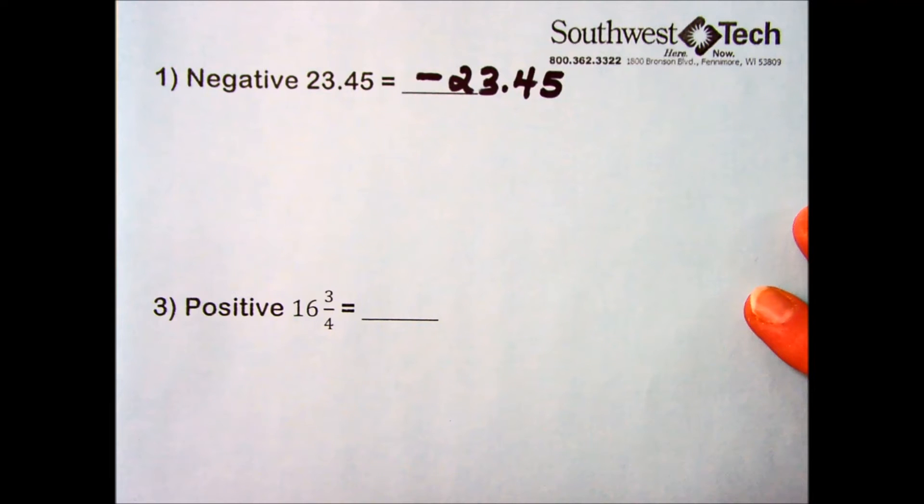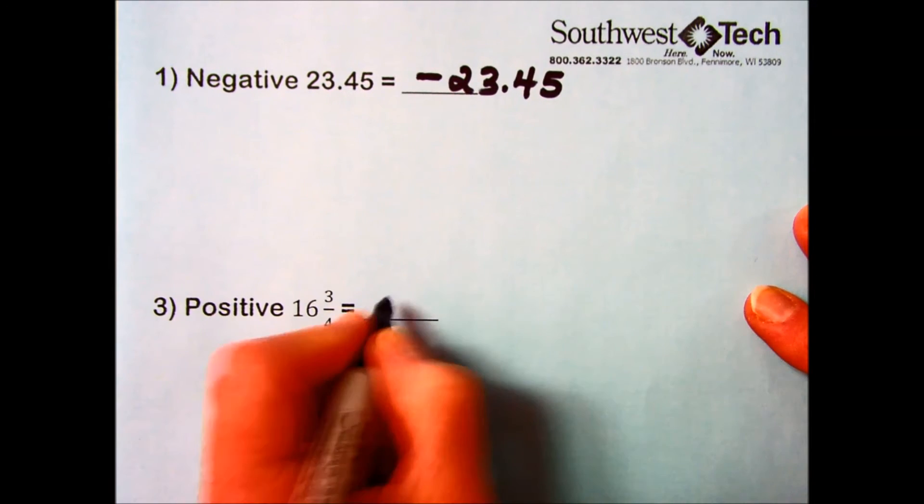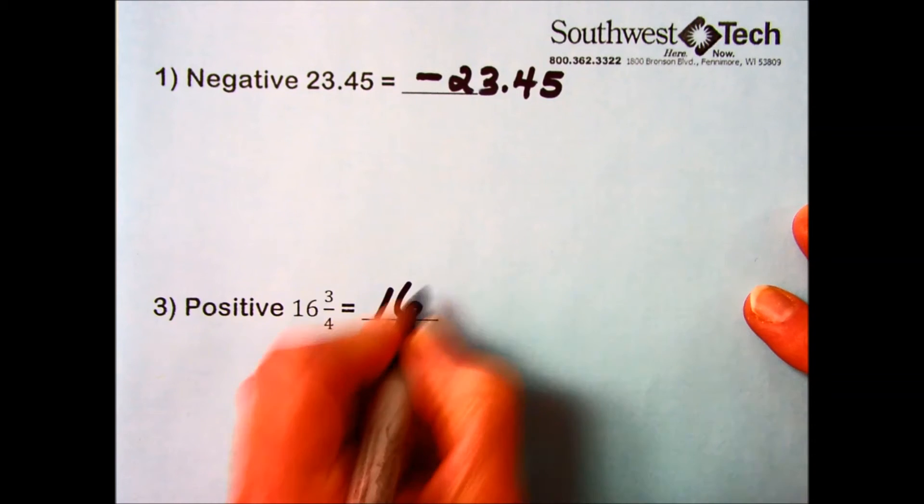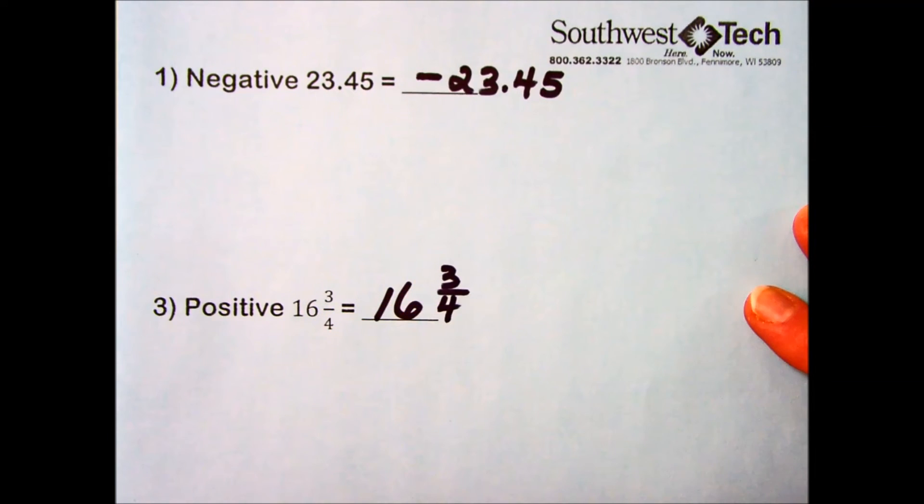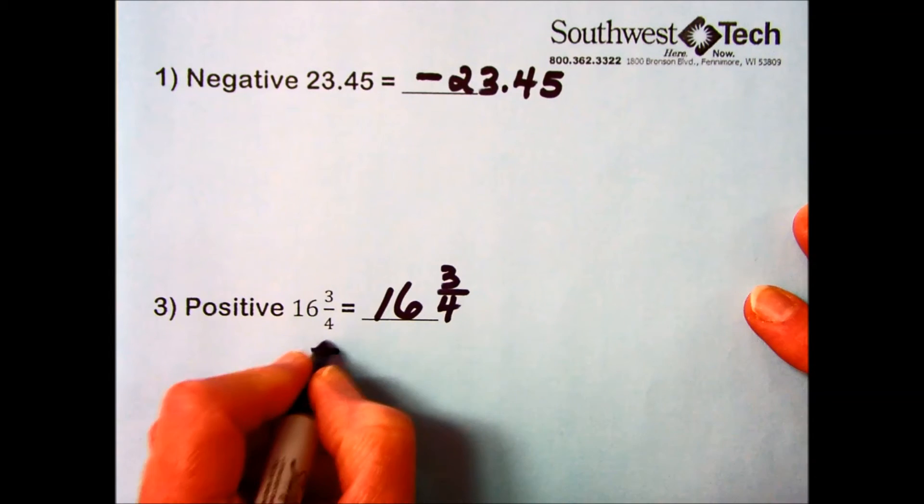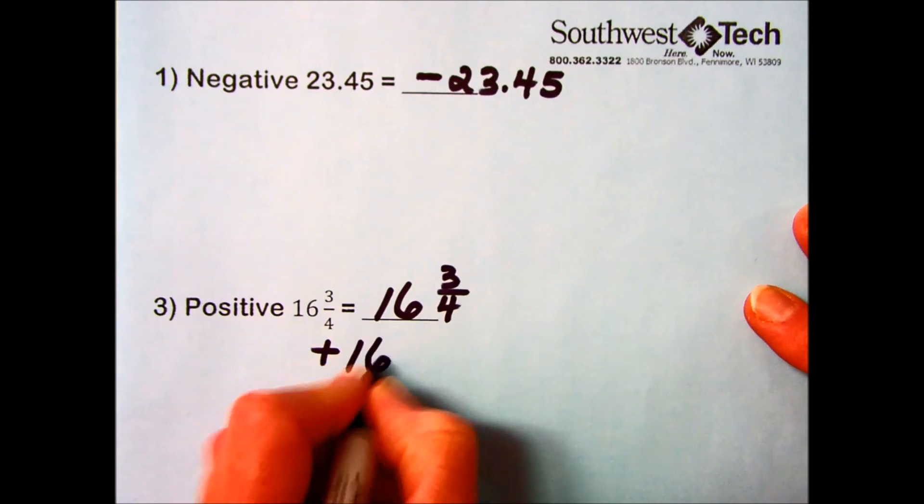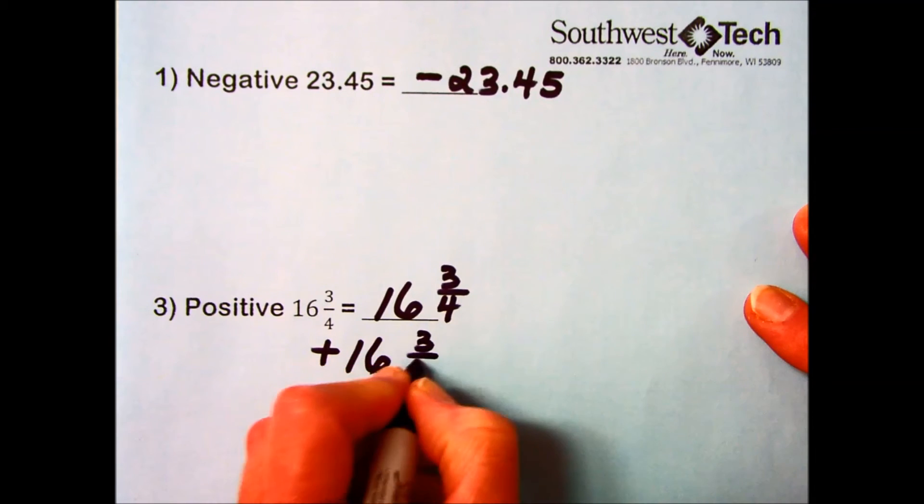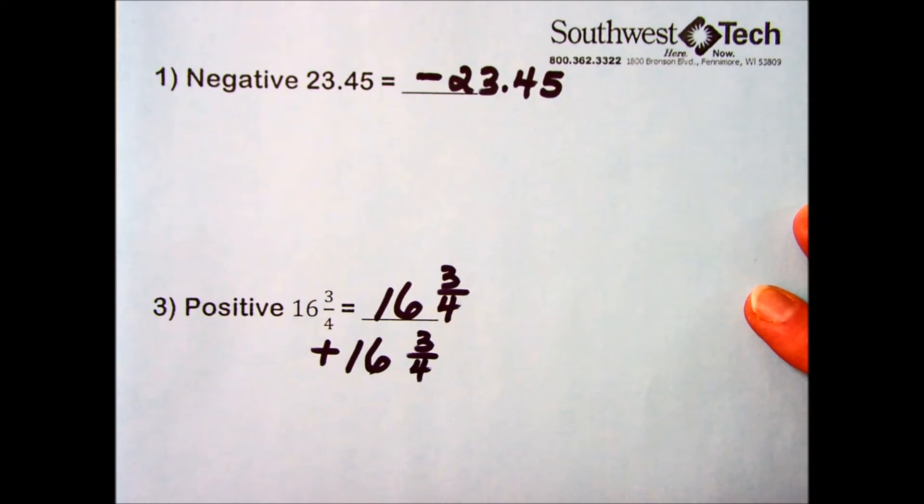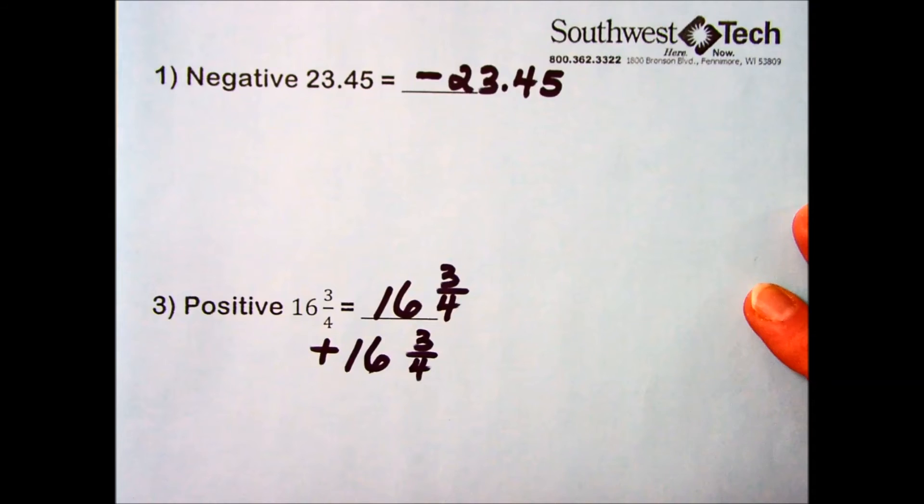The next one: positive 16 and 3 fourths. The word positive indicates I can write it without a sign. The implication or understanding is that it is positive. Or if I clearly want to emphasize that it is positive, I can put the plus sign there for positive 16 and 3 fourths.